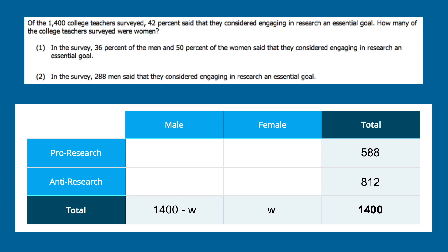A key takeaway: if we know two cells in either a row or a column, we can solve for the third cell. Now, moving to statement one: 36% of the men are pro-research and 50% of the women are also pro-research. Converting those percents into decimals, this gives us 0.36 times (1,400 minus W) for the number of pro-research male teachers, and 0.5W for the number of pro-research female teachers.